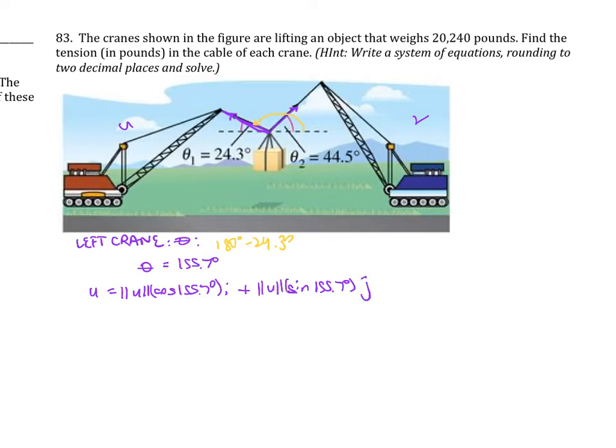Now let's look at the right crane. The right crane is going to be V, and theta is the same. This is going to be the magnitude of V times cosine of 44.5 degrees plus the magnitude of V times sine of 44.5 degrees J.